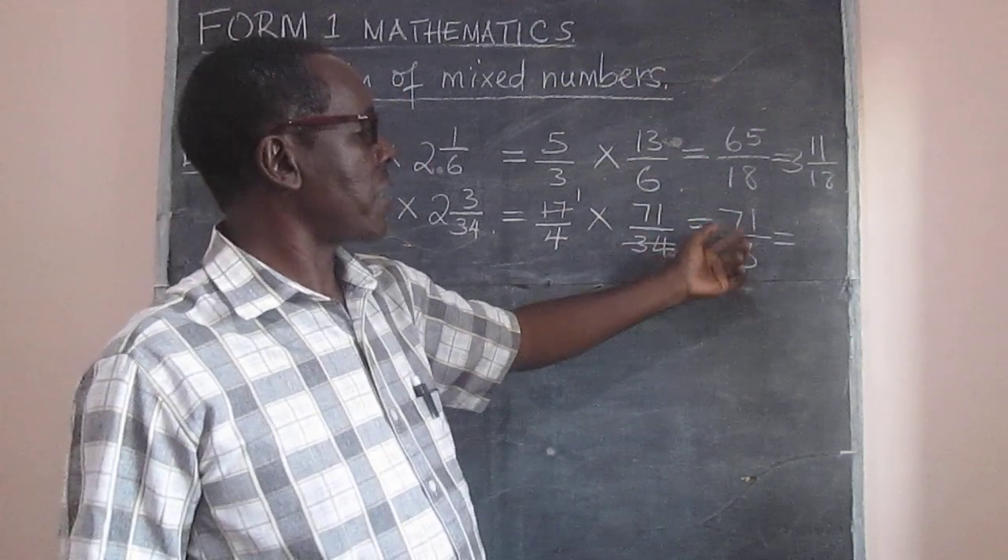Again, we need to do the division. Seventy-one divided by eight. Eight times eight is sixty-four. So eight goes eight times in seventy-one.